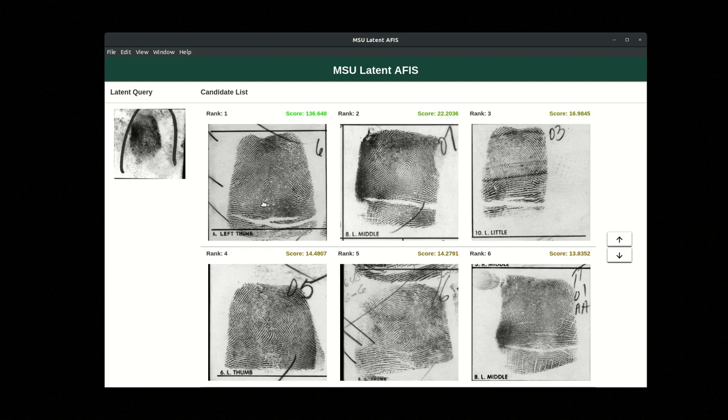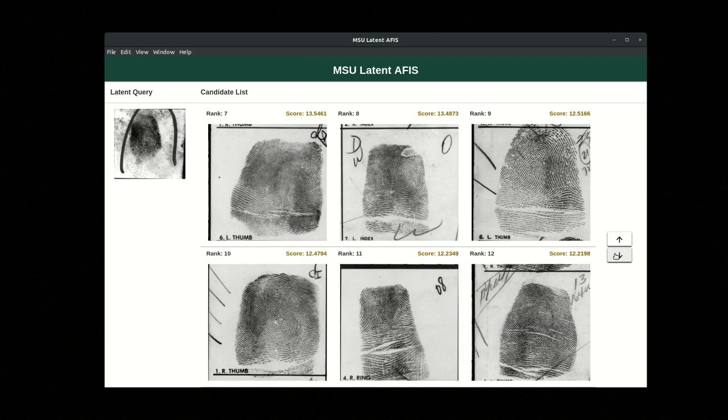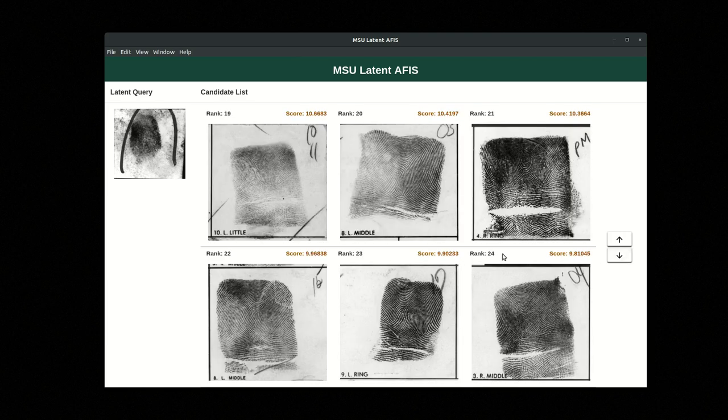Now when this is finished, we're going to see this candidate list. Next to each potential mate, you can see the rank here, and you can see this is the similarity score. We can scroll through a few pages here if we want to. In this interface, it's just going to show the top 24 candidates across four pages.